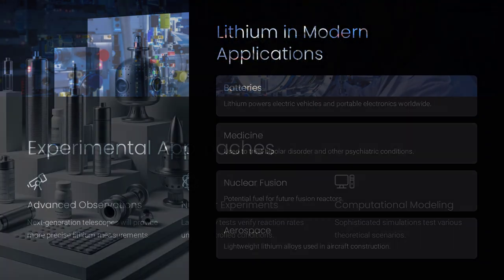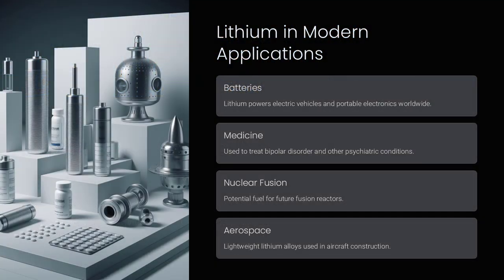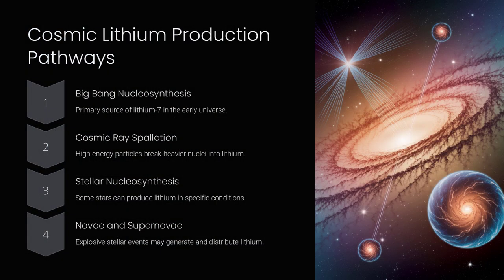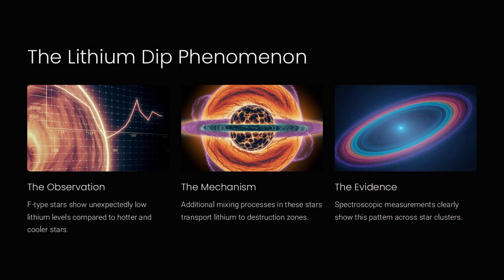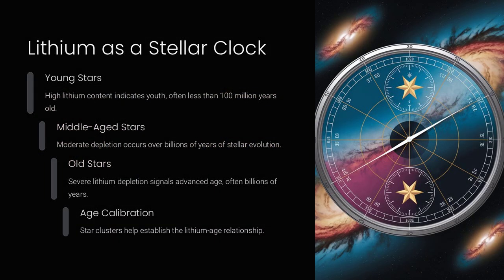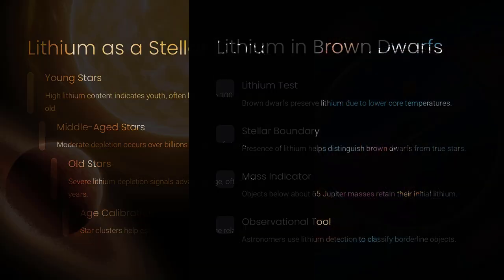These processes, while not fully understood, might account for part of the missing lithium. The problem remains one of the key puzzles in cosmology because it challenges the precision of our models of the early universe. If our predictions of the primordial lithium abundance are incorrect, this could have implications for our broader understanding of cosmology and particle physics.